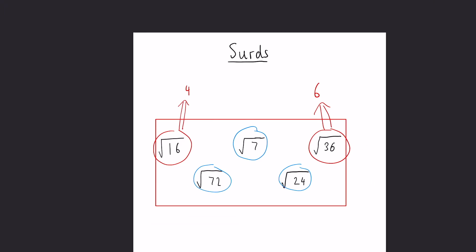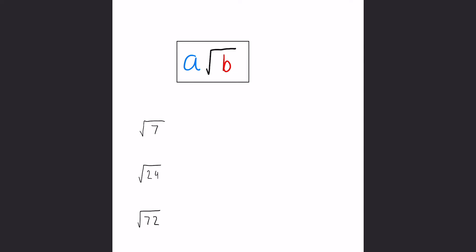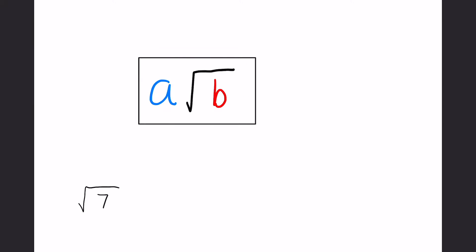On the next page we have these three and we are going to look at how we can write them in a simplified way. A common form for simplifying is a√b where a and b are both integers or whole numbers.